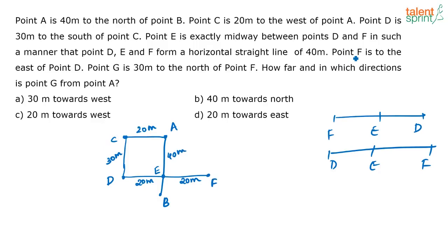Then point F is to the east of point D. Yes that you have used. Point G is 30 meters to the north of point F. So point G is going to be here. It is going to be here. See this length is 30. This full length is 40. So if this is 30 this has to be 10 and these two will be in the same line. So this has to be point G. Because it is given point G is 30 meters to the north of point F.